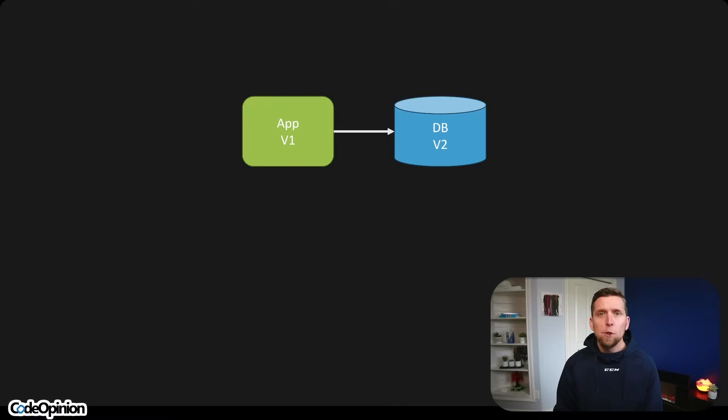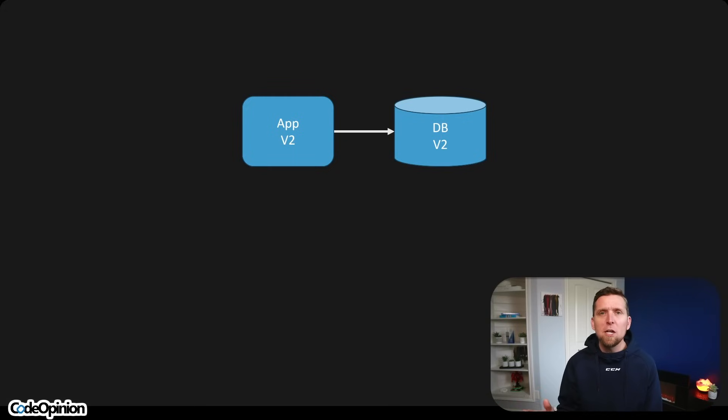Making your schema change first really depends on what type of database you're using. For example, if you're using a relational database and you need to make a schema change like adding a column, you have options such as making it nullable or giving it a default value. If you do that, your existing application doesn't care about that column — everything will just work. So if we've deployed our new schema changes and version one of our app is totally fine with those changes, then if we deploy our new version and there's some catastrophic bug in our code unrelated to schema changes, this allows us to roll back.